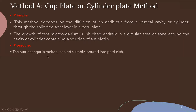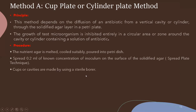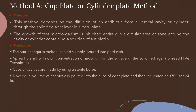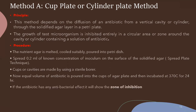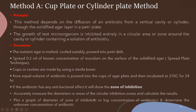Procedure: nutrient agar is melted, cooled suitably, and poured into the Petri dish. Spread 0.2 ml of known concentration of inoculum on the surface of the solidified agar using spread plate technique. Then prepare cups and cavities using a sterile cork borer. Equal volume of antibiotic — different dilutions of standard and test antibiotic — is poured into the cups and then incubated at 37°C for 24 hours. If the antibiotic has antibacterial effect, it will show a zone of inhibition.